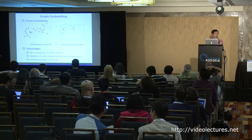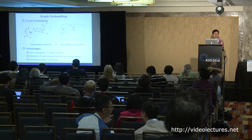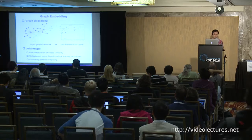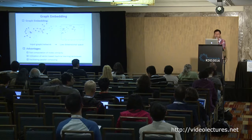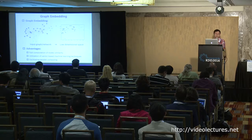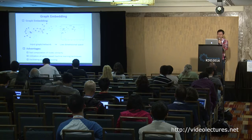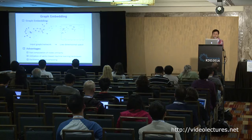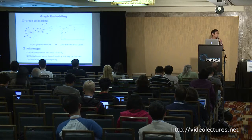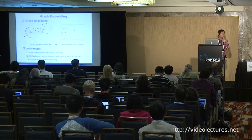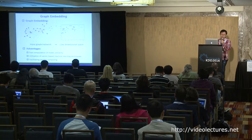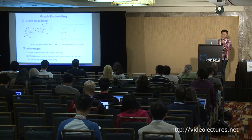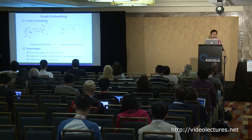In other words, we want to use vectors to represent nodes. On the left is the input graph and on the right is the projection in low-dimensional space. It has several advantages: for example, fast computation of node similarity, the ability to utilize vector-based machine learning techniques, and to facilitate parallel computing.